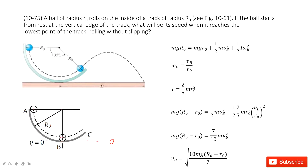When it reaches position B, we consider its energy. We must consider the potential energy for B, because the center of mass of the ball is at a distance R₀ from the reference point. Then we consider the linear kinetic energy and the rotational kinetic energy for object B.